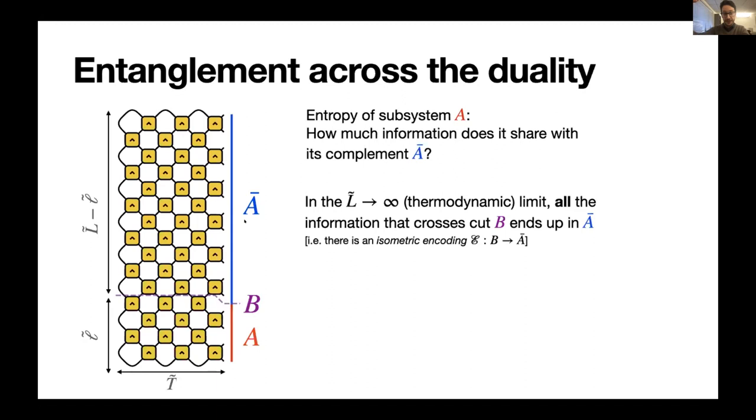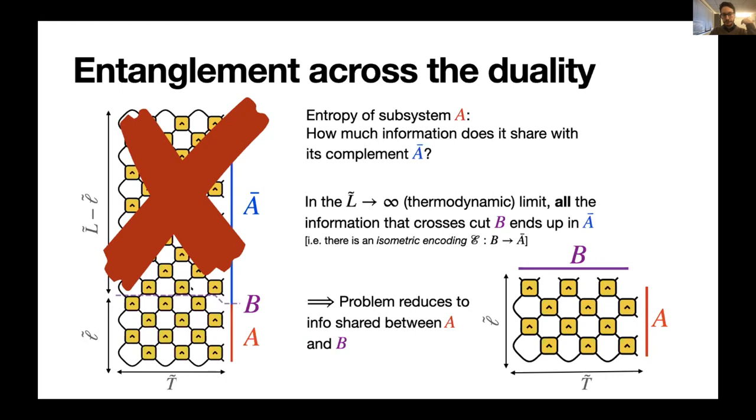And here, maybe a non-obvious consequence of having this unitary in the transverse direction is that all of the information that makes it from A to this entanglement cut B ends up encoded in the complement A bar, if we take it to infinity. So normally in a unitary circuit, you can have information cross a cut and come back and go out again and so on. And it makes things more complicated, but here because of unitarity, we can essentially forget about the entire top of the circuit here because once quantum information has made it into one of these qubits, it's guaranteed to be retrievable in this subsystem A bar. We can show that there is an isometric encoding of subsystem B into the subsystem A bar.